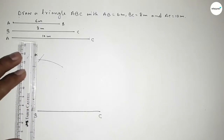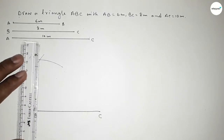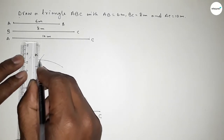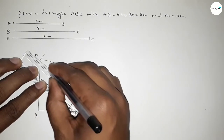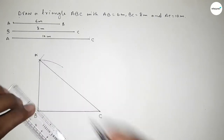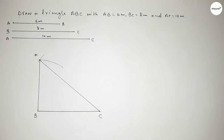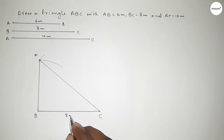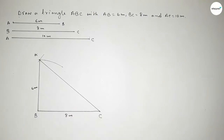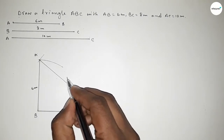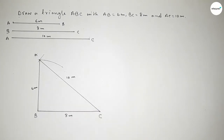Now taking that intersection as point A. First joining A and B, then joining A and C to get the triangle. This side is 8 centimeters, this side is 6 centimeters, and this side is 10 centimeters.